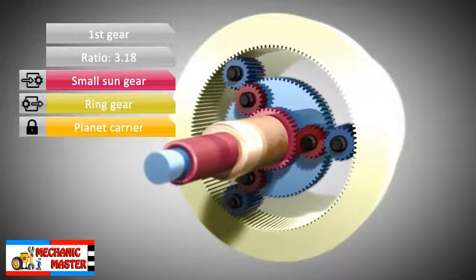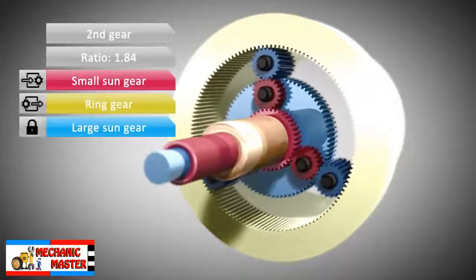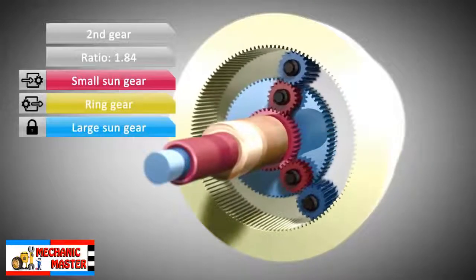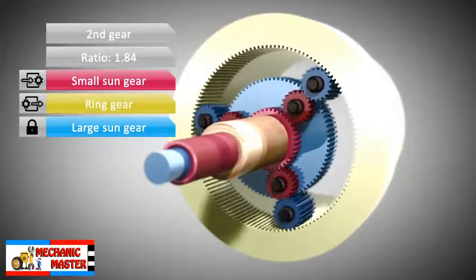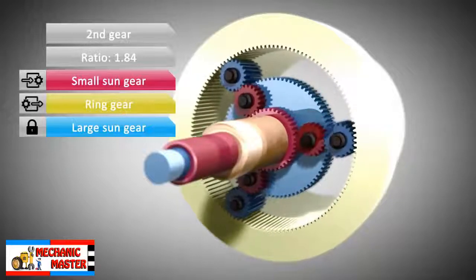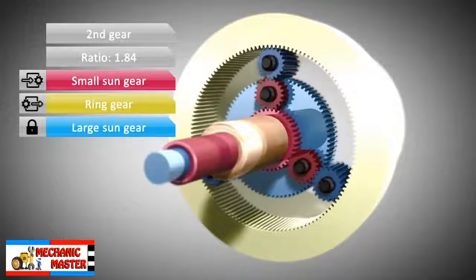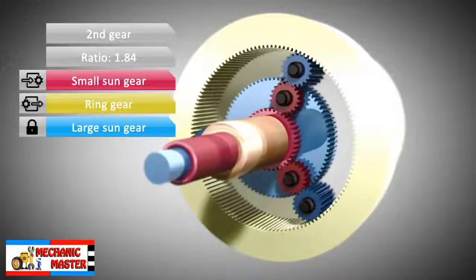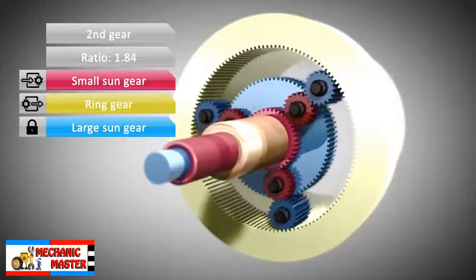In second gear, the planet carrier is no longer a fixed member of the system. Now it can rotate freely. However, the large sun is held stationary, so the large sun cannot rotate. But once again, the small sun is the input of the system and drives the ring gear.